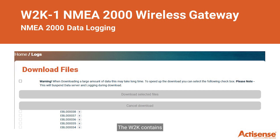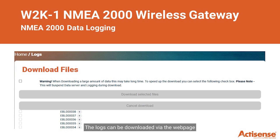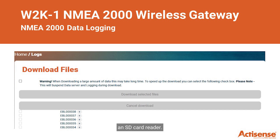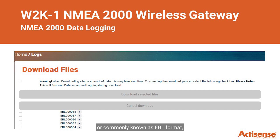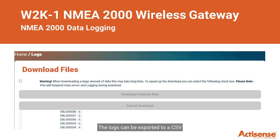The W2K contains an 8GB industrial-grade SD card which logs everything on the NMEA 2000 network. The logs can be downloaded via the webpage or taken directly from the SD card using an SD card reader. As the logs are recorded in electronic binary log — commonly known as EBL format — they can be opened and analyzed in ActiSense's EBL Reader. The logs can be exported to a CSV or decoded CSV file for further analysis, but more importantly, as the device logs everything on the NMEA 2000 network, in the event of a collision it can hold valuable information if an investigation is needed.